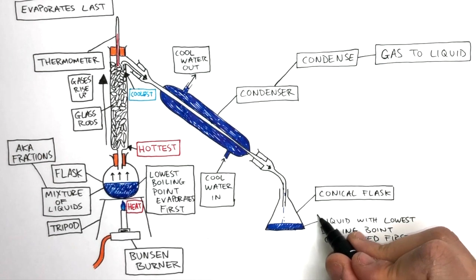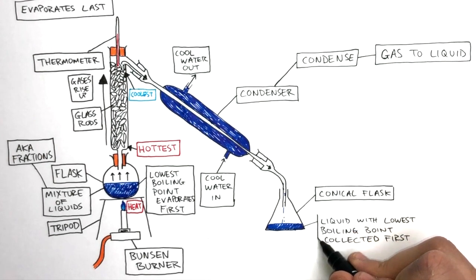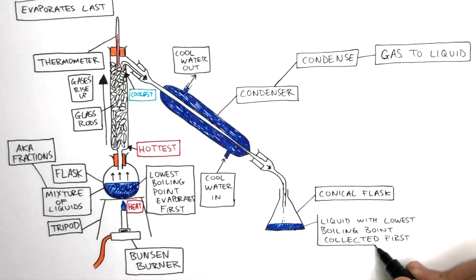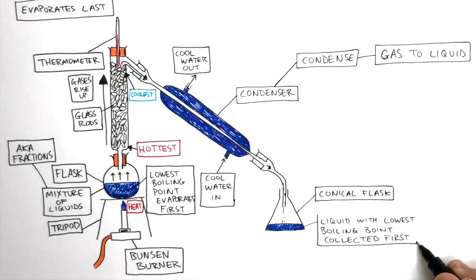As the fractionating column heats up, as shown by the thermometer, and the liquid with the next boiling point starts to evaporate, we swap the conical flask for a new one, where this gas then flows into the condenser, is condensed, and is collected in the conical flask as a liquid.